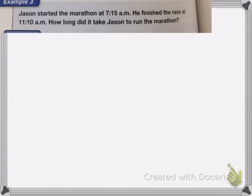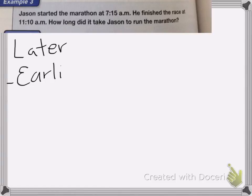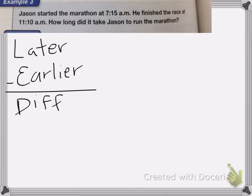So this next section is on elapsed time. This one's a little bit more difficult, because it has to deal with time instead of years. Just to remind you, the equation will be the later time minus the earlier time, and that will give us our difference. Jason started the marathon at 7:15 and finished the race at 11:10 a.m. How long did it take him to run the marathon?